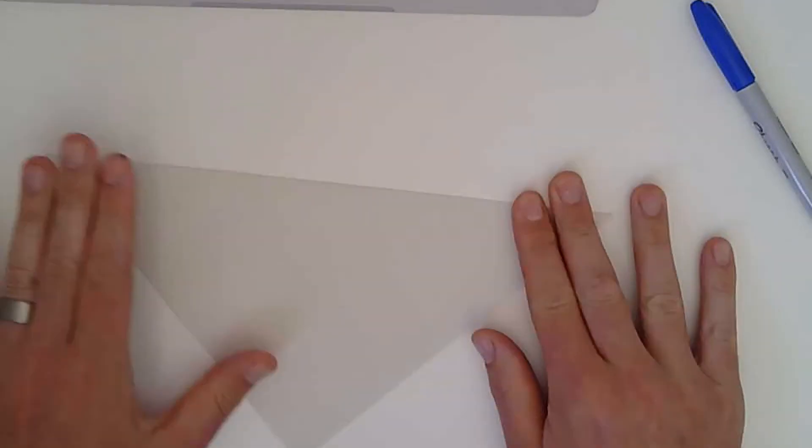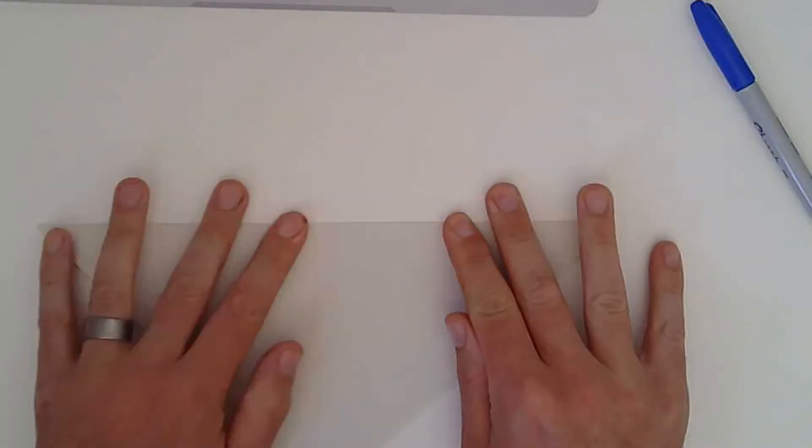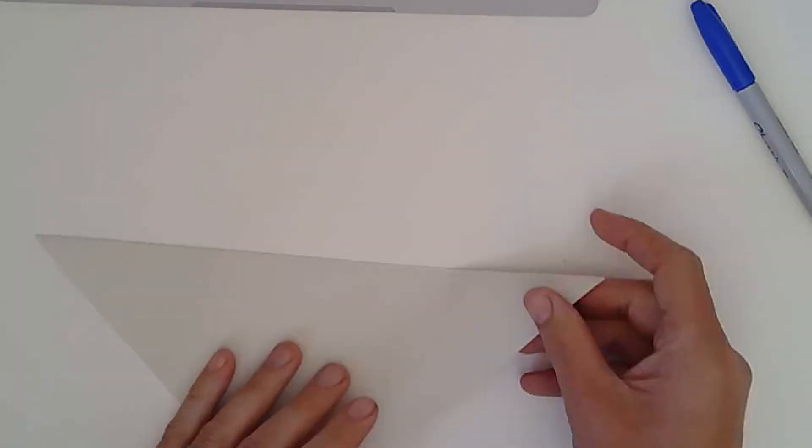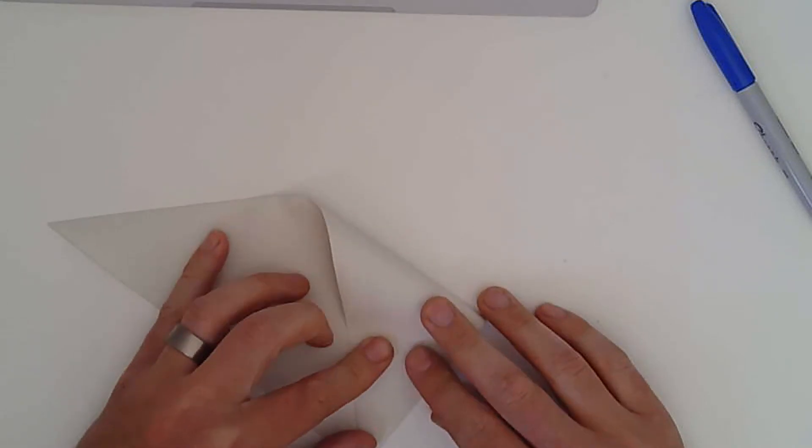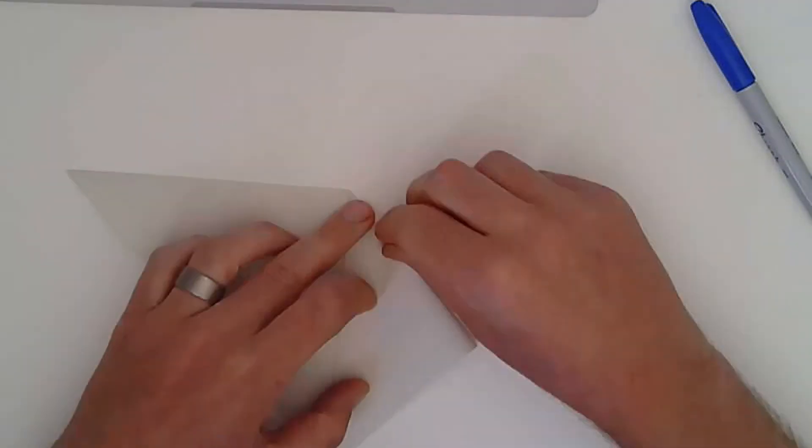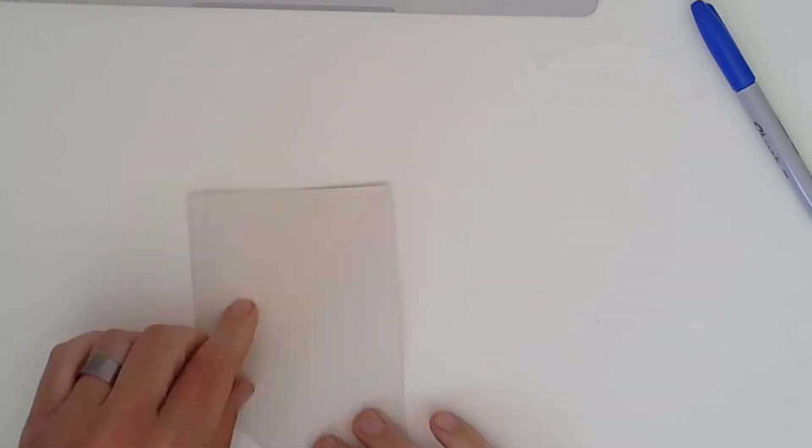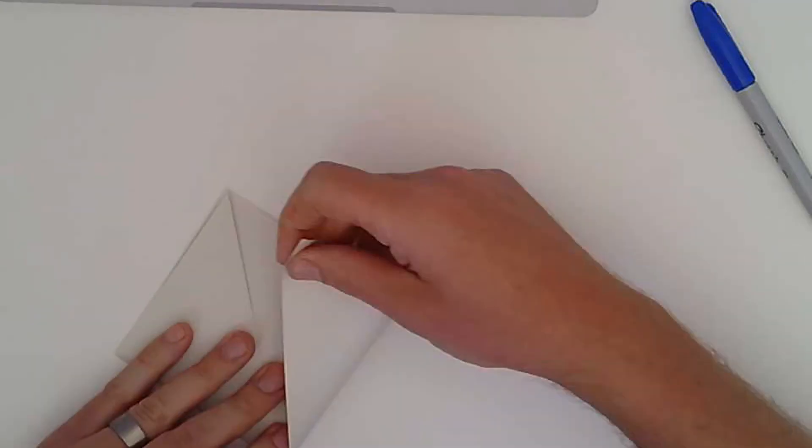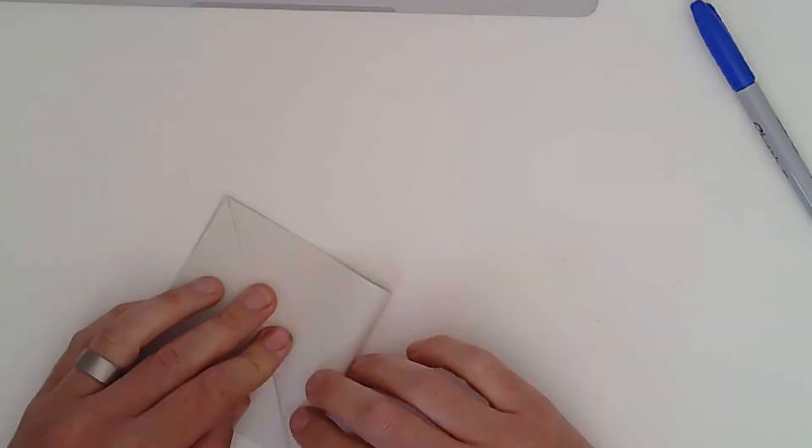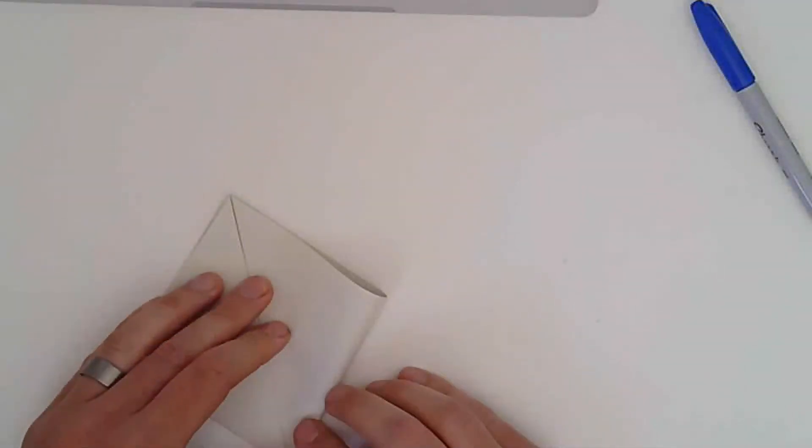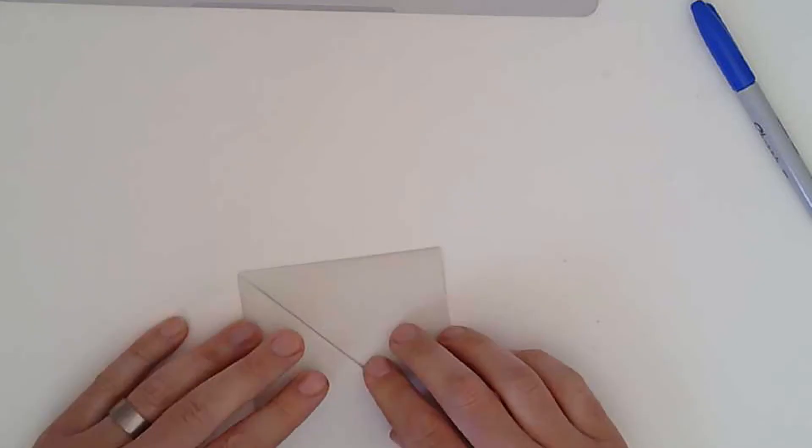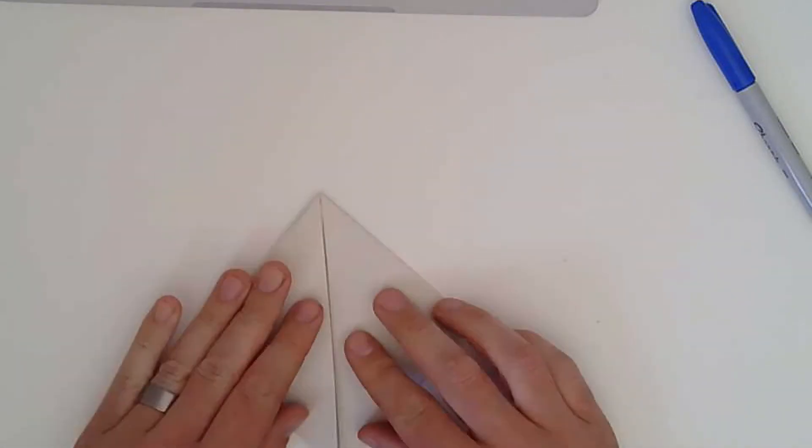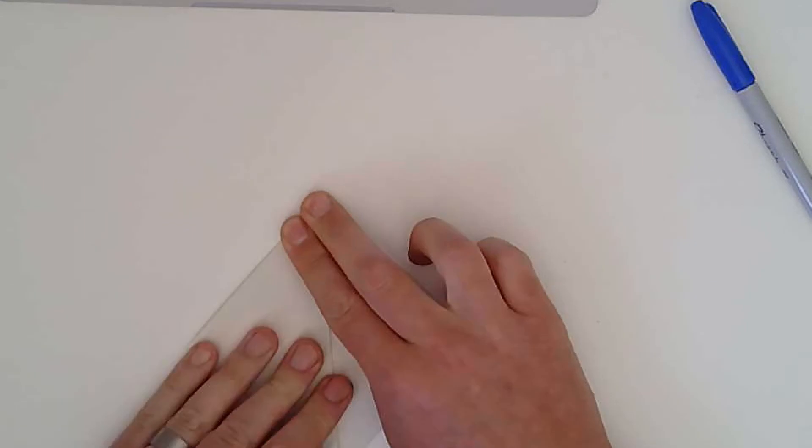So corner to corner, and what we're going to do is make that nice and crisp. I'm gonna put that corner there down to there. Exactly the same with that one, from that corner down to there. So got what looks like a perfect square at the moment.